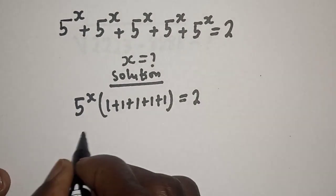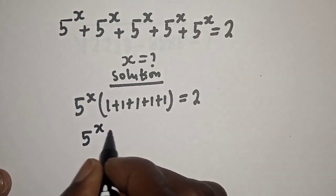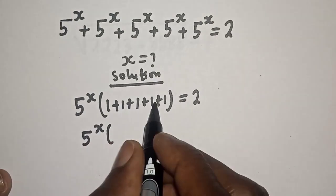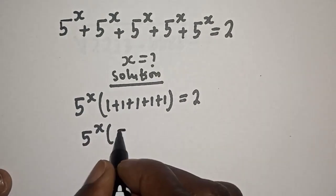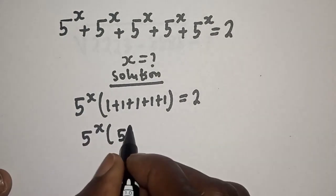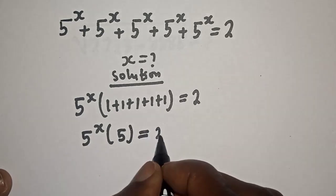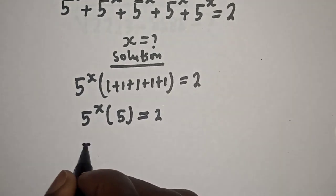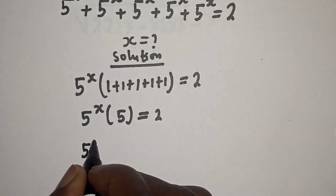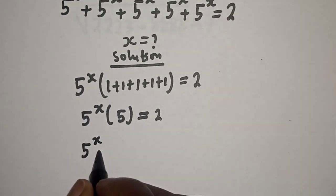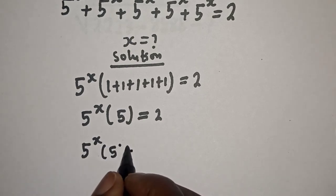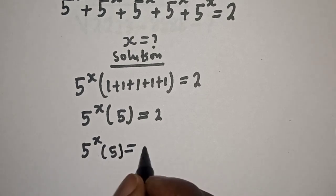Then we have 5 raised to power s, bracket: 1 plus 1 is 2, plus 1 is 3, plus 1 is 4, plus 1 is 5. So 5 raised to power s times 5 is equal to 2.